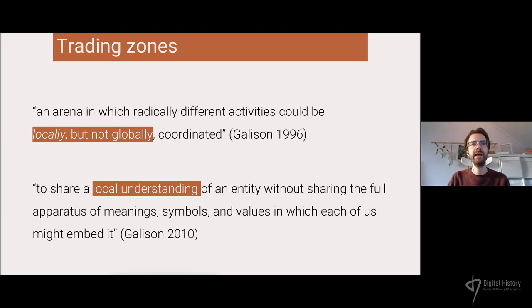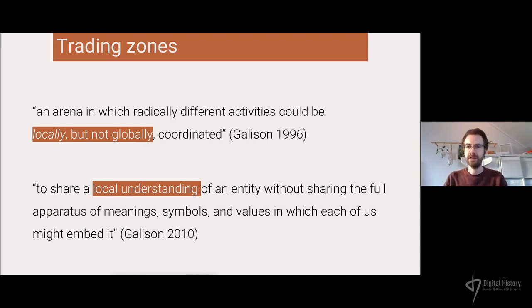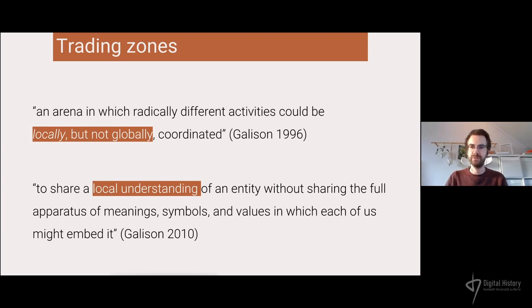What they need to do is create a shared local understanding of an entity without sharing the full apparatus of meaning, symbols, and values. A historian and a computer scientist can start talking about a source, and the computer scientist can analyze that source without diving into the entirety of historiography and hermeneutics — and similarly the historian does not need to know everything about computer science to have this discussion.